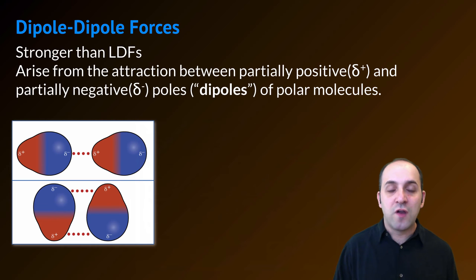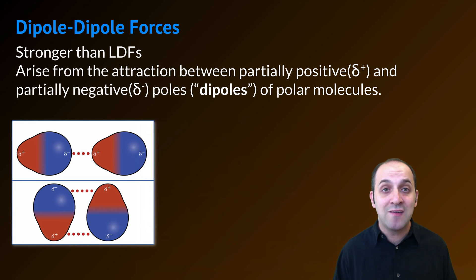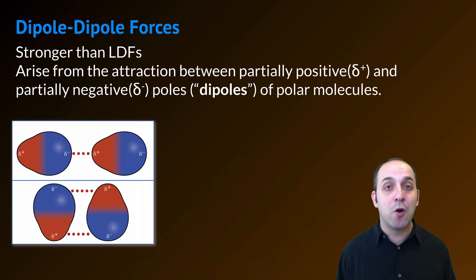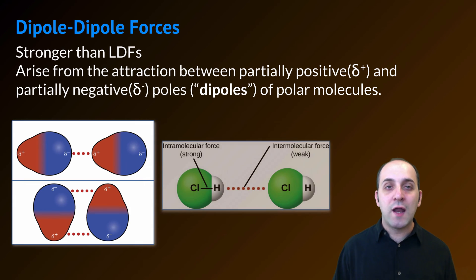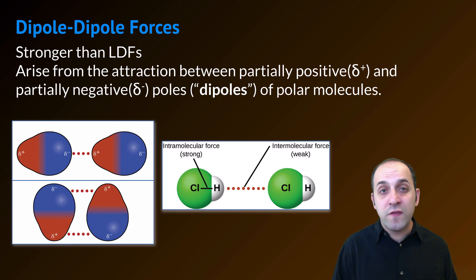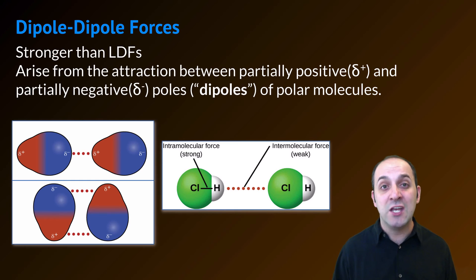Our next type of intermolecular attractive force is dipole-dipole forces. These are stronger than London dispersion forces, and these come from the interaction between partially positive and partially negative poles — the dipoles — of polar molecules. The force between two molecules of HCl is a dipole-dipole force: hydrogen is partially positive and chlorine is partially negative. The force is stronger than London dispersion forces, but is still comparatively weak when compared to the intramolecular forces holding the atoms together within the molecule.